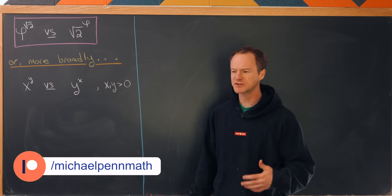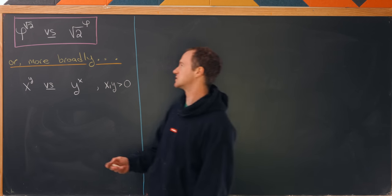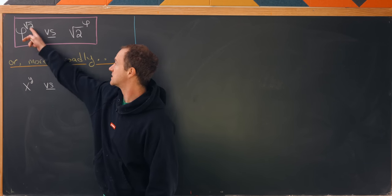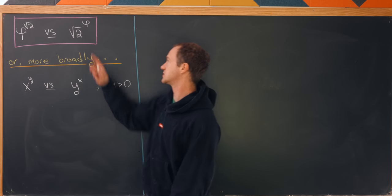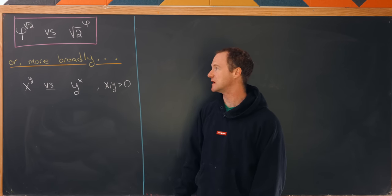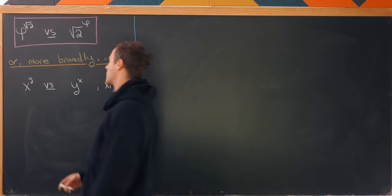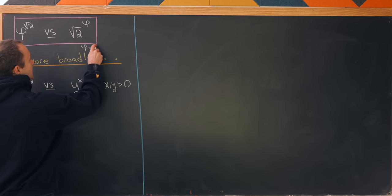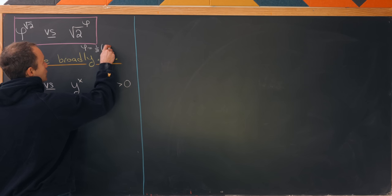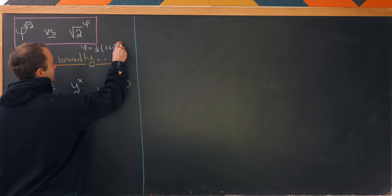So we'll start with the toy example that which one is larger, phi to the square root of 2 versus square root of 2 to the phi. And by phi here I mean the golden ratio. So I mean 1 half times 1 plus the square root of 5.